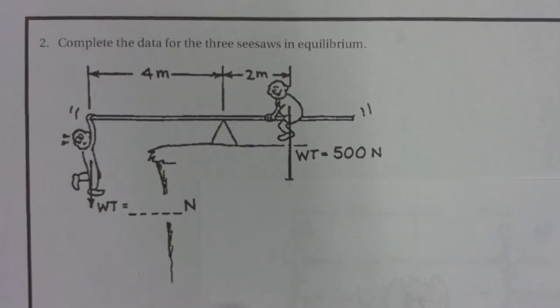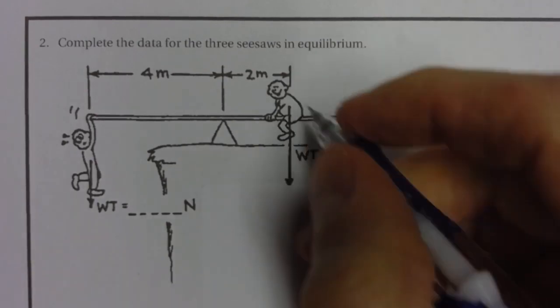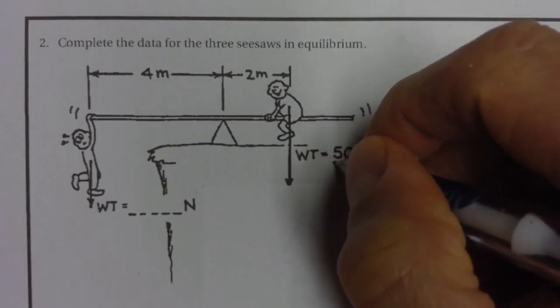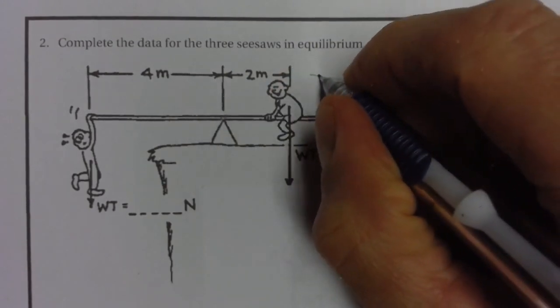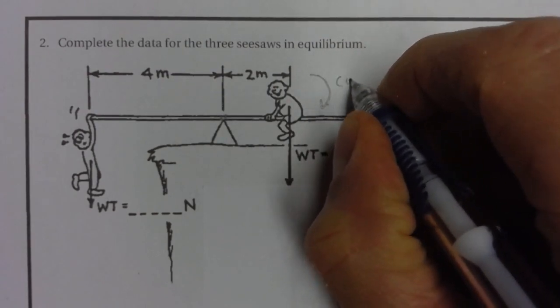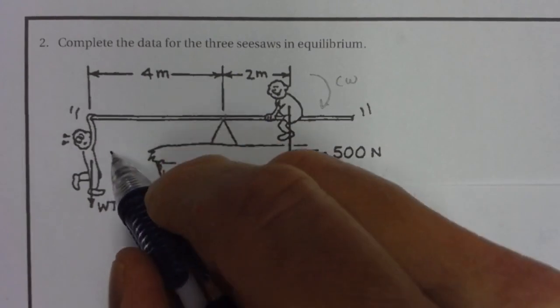This man right here is applying a force downward on this right side that's going to cause a clockwise torque. The guy hanging off over here is pulling down also, but down isn't what's important to torque—what's important is the rotational direction.